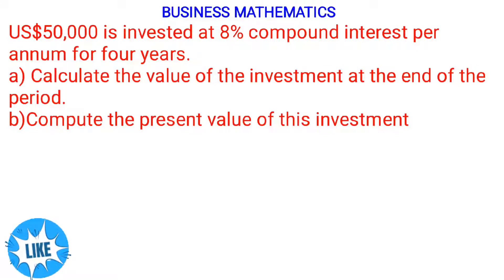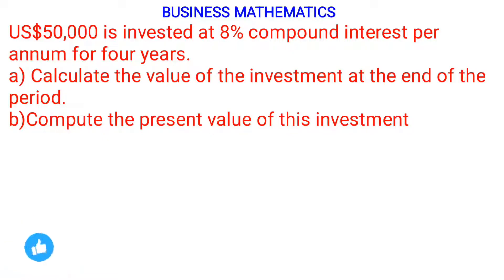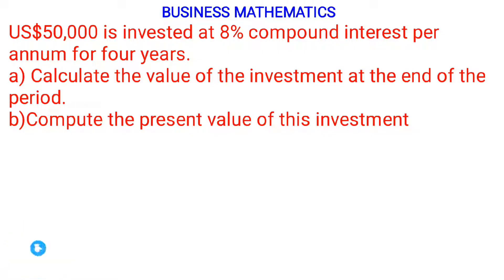$50,000 USD is invested at 8% compound interest per annum for 4 years. Part A: calculate the value of the investment at the end of the period. Part B: compute the present value of this investment. So that's what we have been asked to calculate in this video.